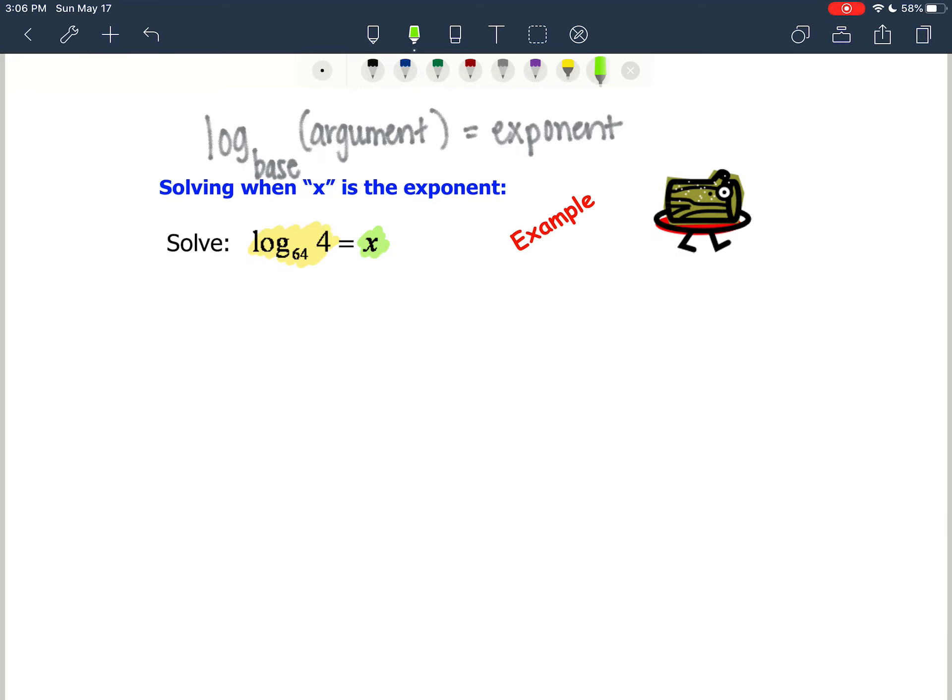So when that variable happens to be equal to the logarithm, we're just going to write an exponential form and try to solve the exponential. So write an exponential form is going to be our first step. So we have 64. We're going to take our base, raise it to the exponent of x, and that's going to equal 4.